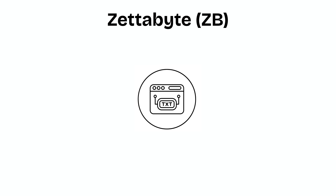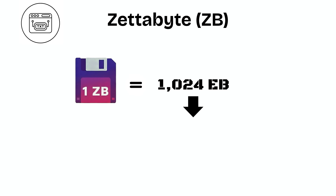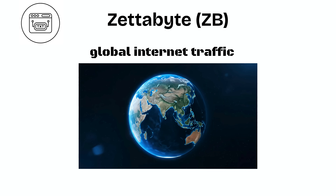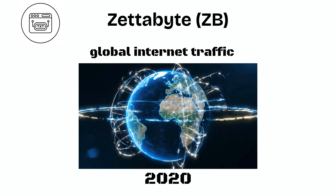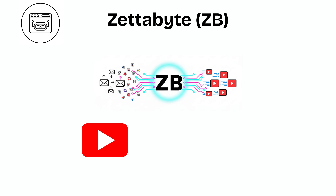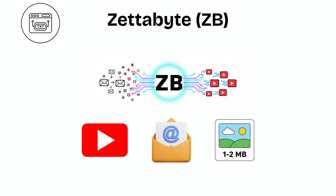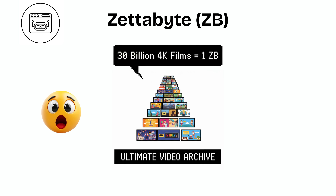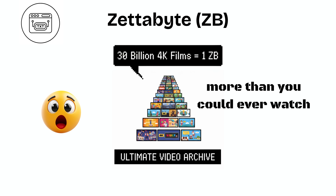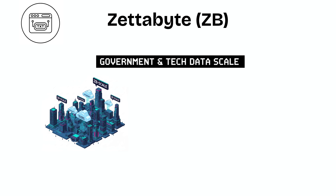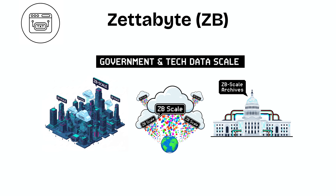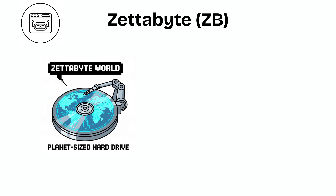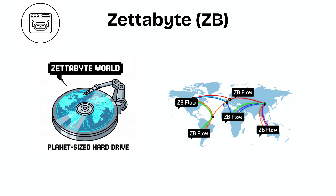Zettabyte (ZB). A zettabyte equals 1,024 EB, or a trillion gigabytes. Global internet traffic in 2020 alone hit around 4 ZB — that's every video streamed, every email sent, every photo uploaded. One ZB could hold 30 billion 4K movies, more than you could ever watch in a lifetime. Big tech companies, cloud services, and governments now talk about zettabytes when measuring worldwide data. It's the scale where data stops feeling human-sized and starts feeling planetary.